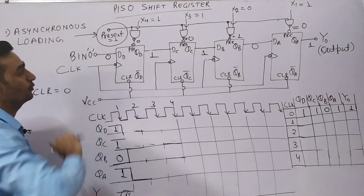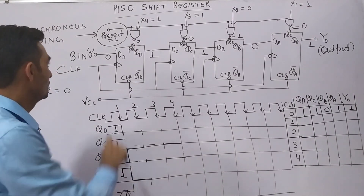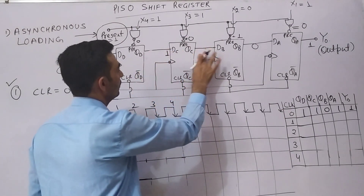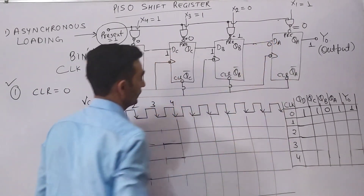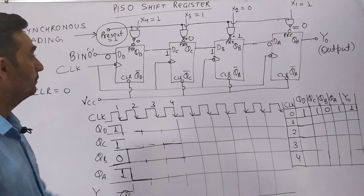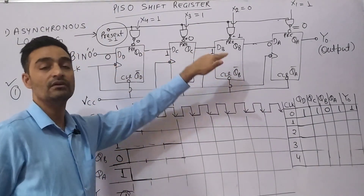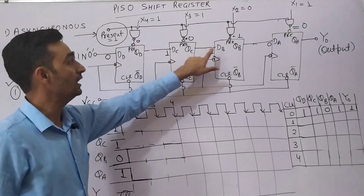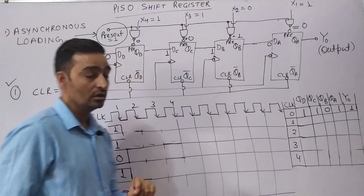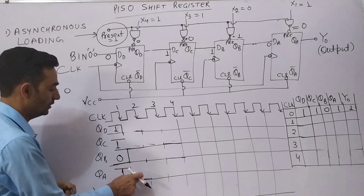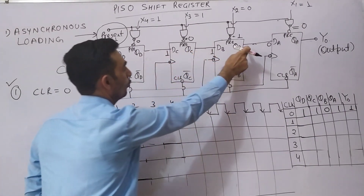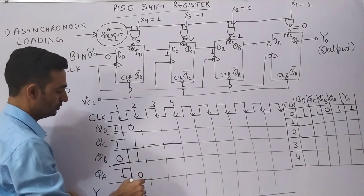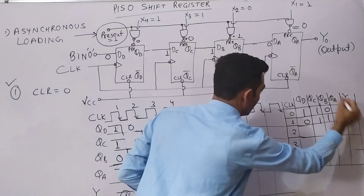Now let us calculate what data is available at the input of each flip-flop. The input of the first flip-flop is always connected to 0, so that input is 0. The inputs of the remaining flip-flops take the Q outputs of the previous stage: so the inputs are 0, 1, 1, 0 respectively. Since this is a D flip-flop, the input data is reflected onto QD, QC, QB, QA with the falling edge of the clock. So after the first falling clock edge, the flip-flop outputs become 0, 1, 1, 0.